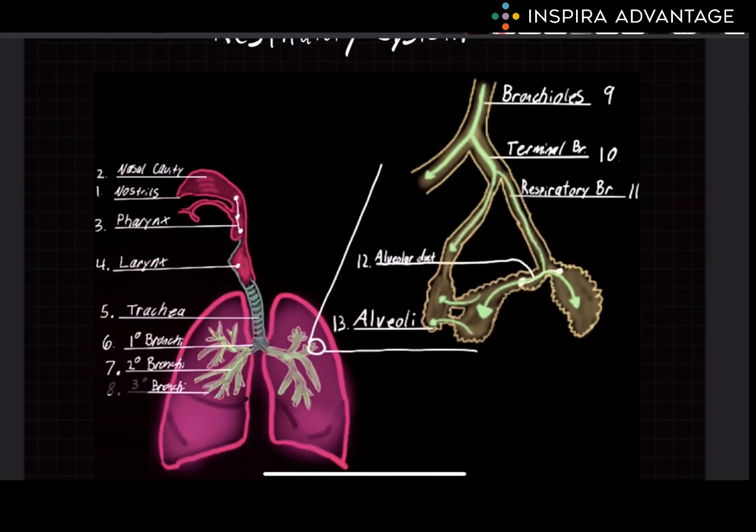The bronchi, bronchioles, and alveoli are responsible for the exchange of gases between the air and the blood. They play a crucial role in the functioning of the respiratory system and are essential for maintaining body homeostasis.